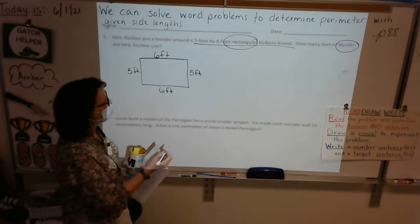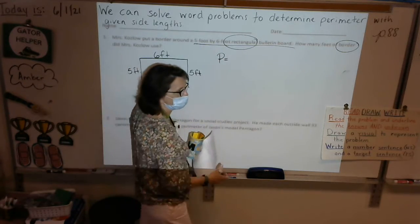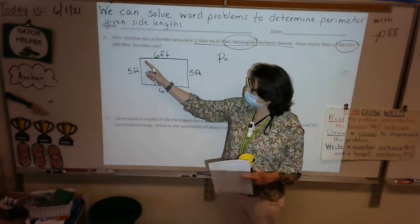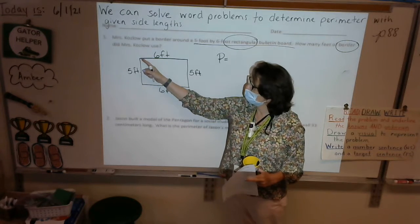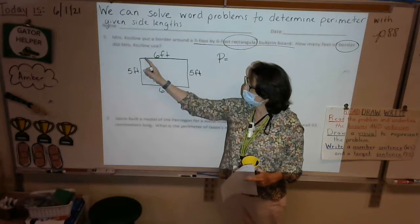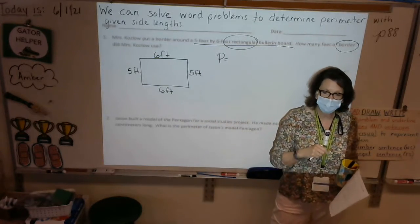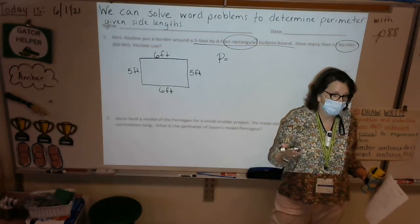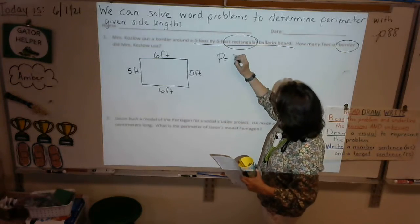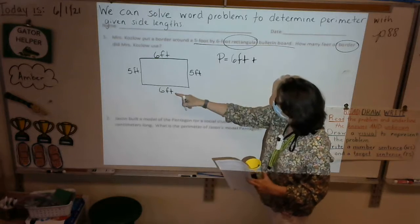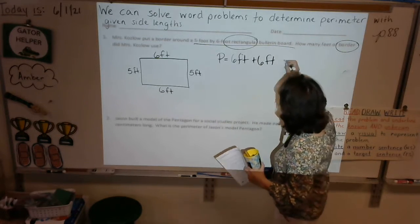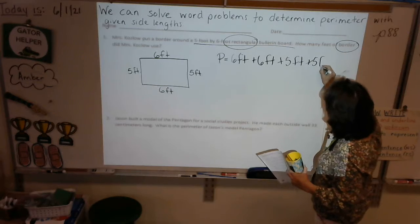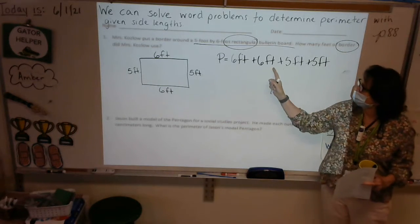Next, we need a number sentence. So I like to get in the habit of writing P equals, because P represents perimeter. And we need to find the distance around the shape, the entire outline. So we would go 6 feet, 5 feet, 6 feet, 5 feet. You can kind of trace it with your finger. Now, what I'm going to suggest, how many of you like to add doubles? I don't know why, but doubles always seem easier for us. So when I list these, I'm going to start with 6 feet, I'm going to put 6 feet, plus the other 6 feet, and then I have two 5 feet, 5 feet plus 5 feet. So I've got 4 sides, and I've got 4 lengths.